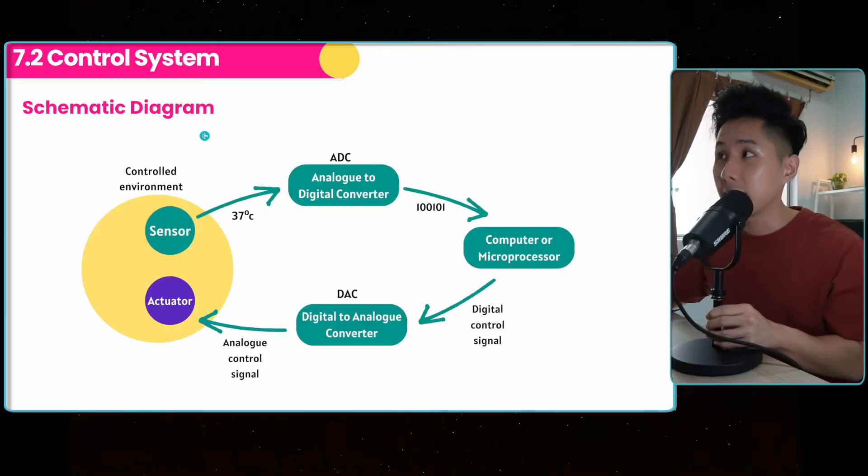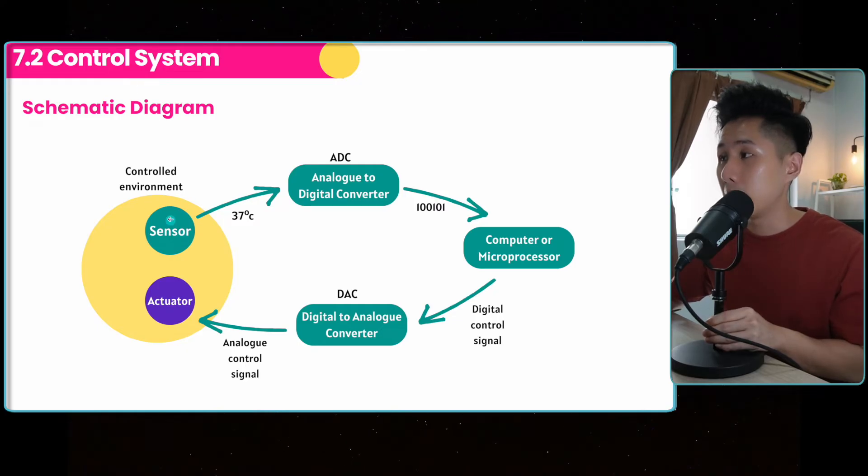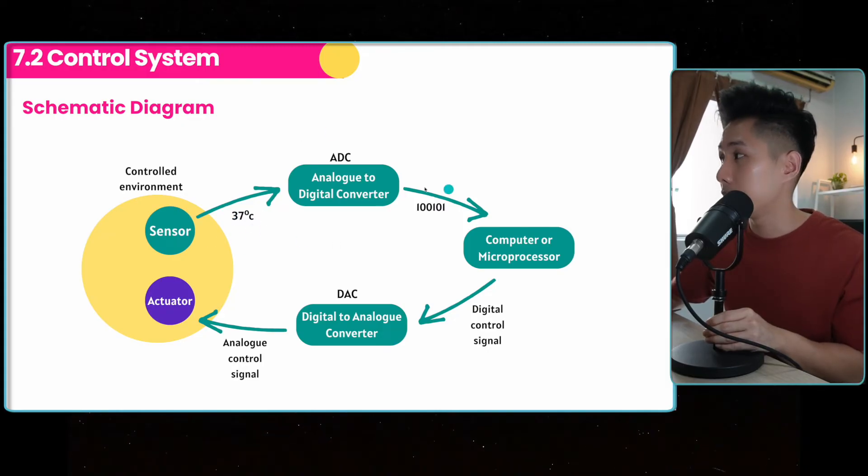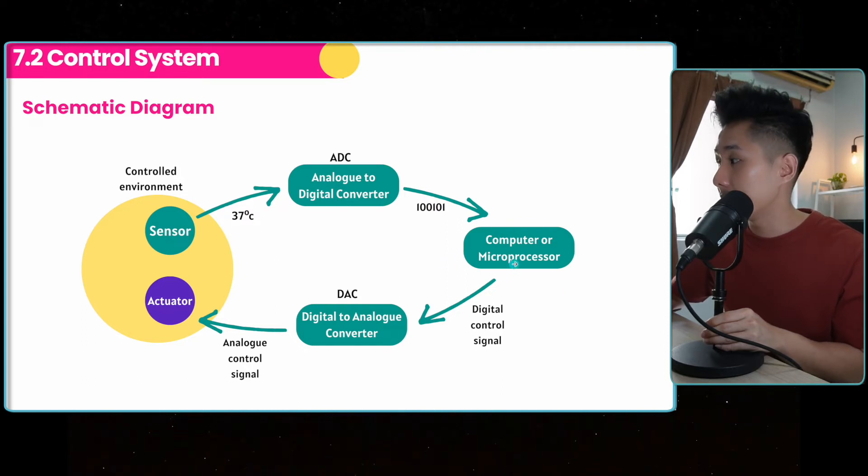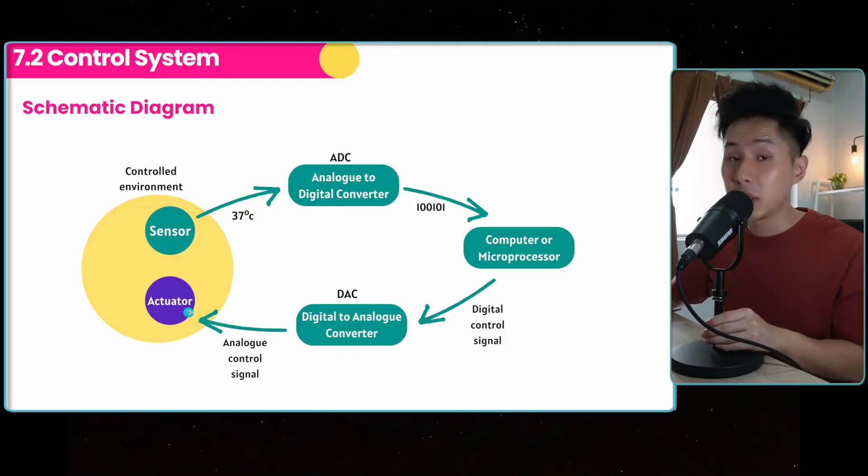So let me show you the schematic diagram to show you how control system actually works. For example, the sensor will sense data, and this data will be sent to the analog to digital converter. This is required because the computer can only understand binary. They can't read a value like 37. The ADC will convert this value into binary, send it to the processor. And once they process it, they will send another digital control signal back to the DAC, digital to analog converter. And this analog control signal will be sent to the actuator.